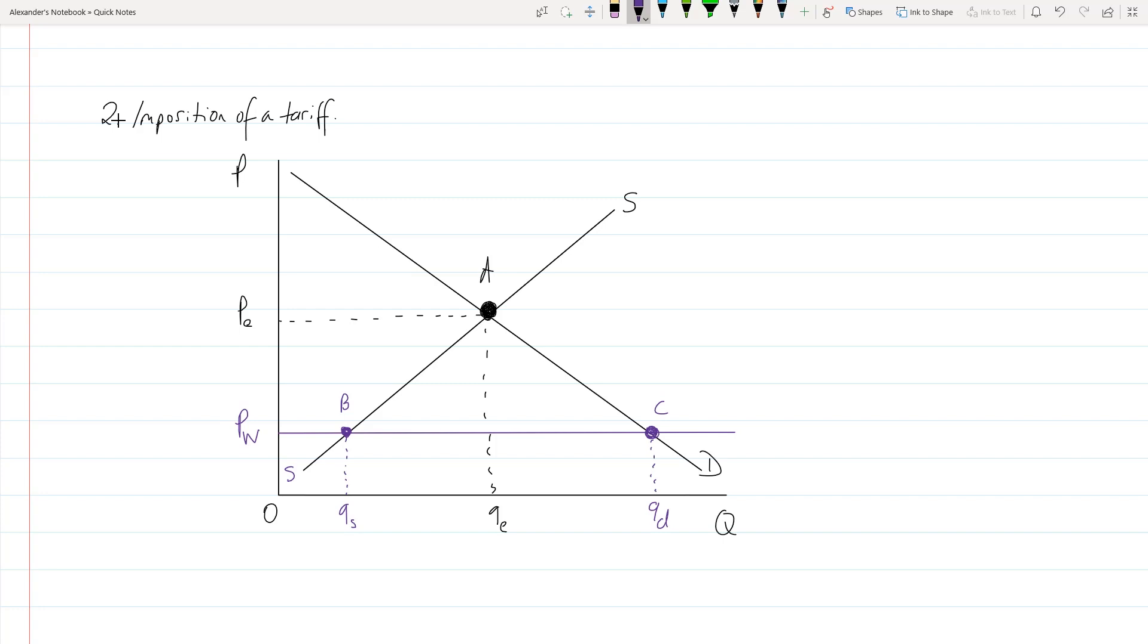Now in order to draw the actual tariff, so I might get a different color pen, and then I'll bring the line back. So then this can be price world plus tariff. Again, another set of comically large points over here.